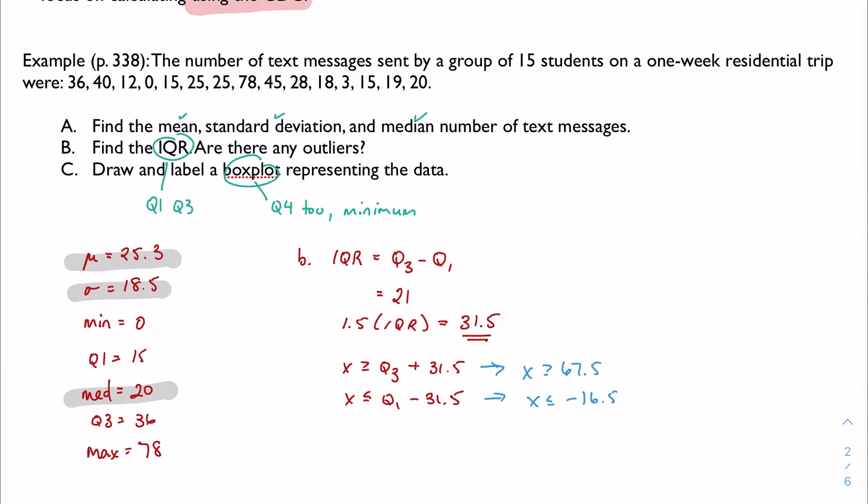So do I have any outliers? I do. I'm going to go back into my original list. It's not always just the max. I could have a couple outliers. My only thing that's bigger than 67.5 in this case actually is just my max is 78. So 78 is an outlier.